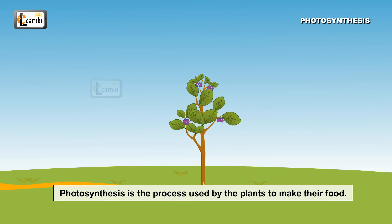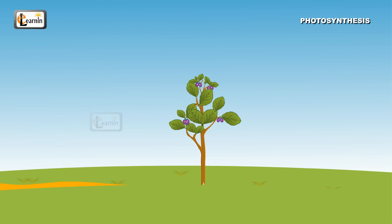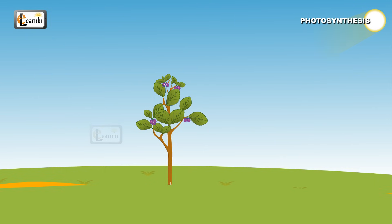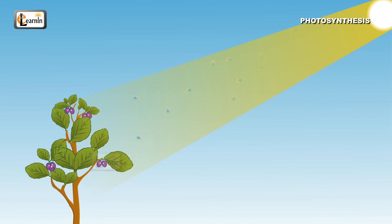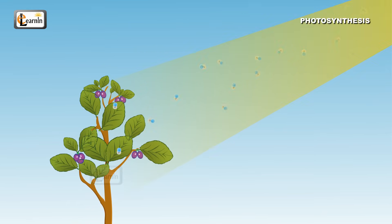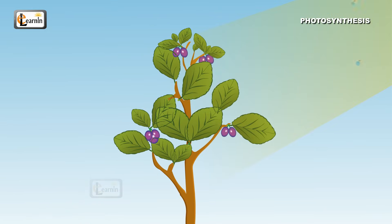Photosynthesis is the process used by plants to make their own food, or in more complex terms, it is the conversion of light energy into chemical energy by plants. This chemical energy is used by the plants for growth and nourishment.